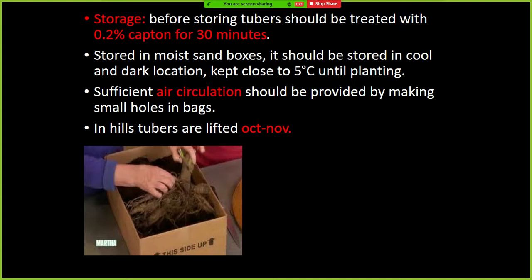The name Dahlia was given by the scientist Abbe Cavanilles. Initially, why were they named like that? Because the stems were hollow — they were also called hollow pipes or water tubes.